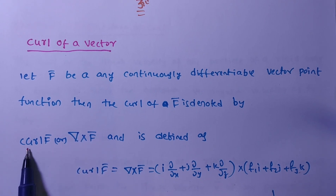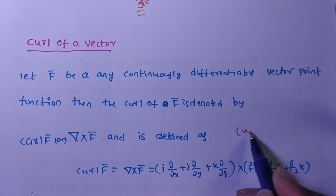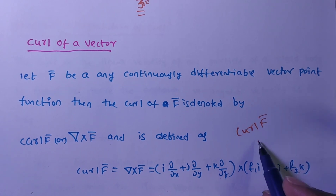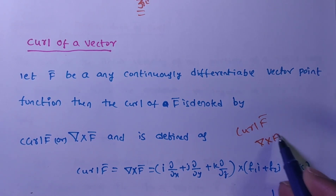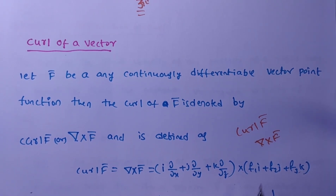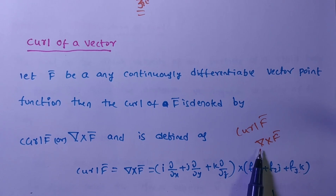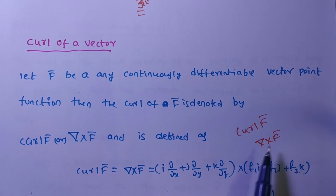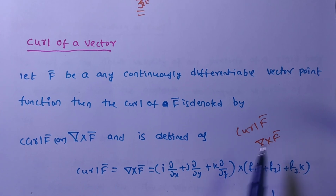In notation you will write simply curl f̄, and symbolically we will write del cross f̄. This is a cross product. Del is a vector differential operator and f̄ is a vector point function, so it is the product of two vectors.